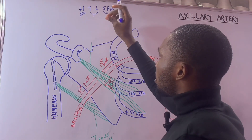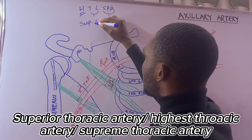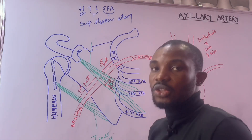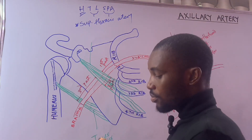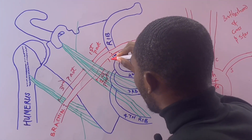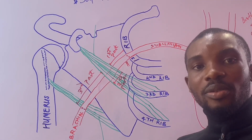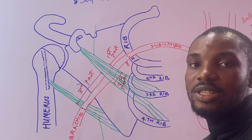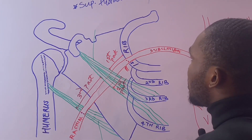For the first part, the H represents the superior thoracic artery — you can also say higher thoracic artery, but the common name is the superior thoracic artery. It arises from the first part and supplies the pectoral muscles, specifically the pectoralis major and pectoralis minor.